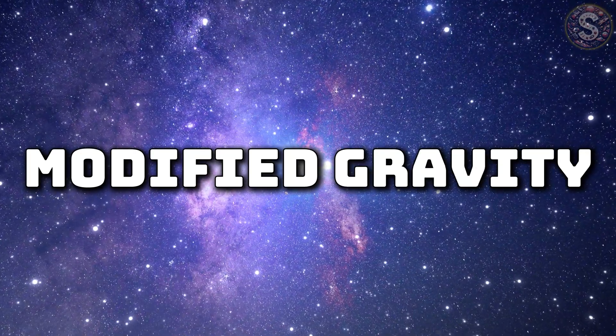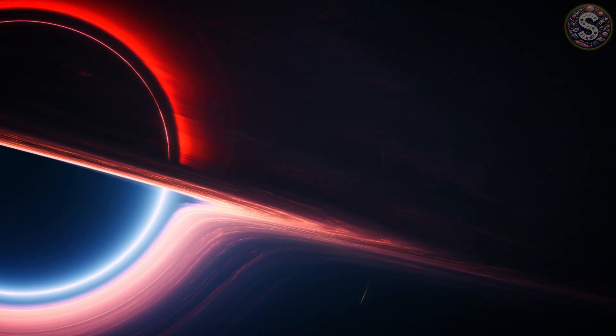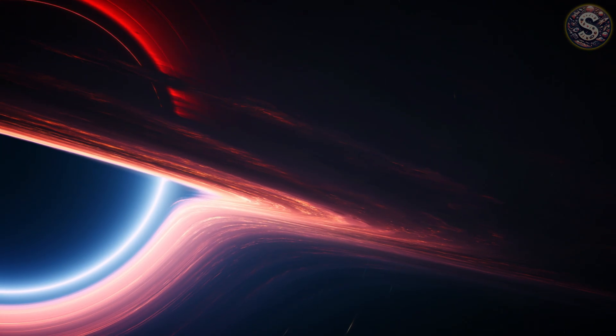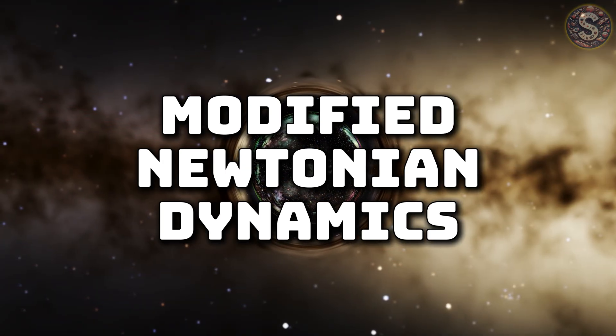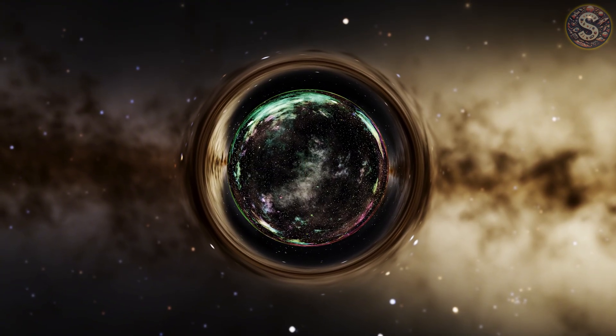Number two, modified gravity. Einstein's equations have survived for over a century, predicting everything from time dilation to black holes. But what if they don't work perfectly on cosmic scales? Enter modified Newtonian dynamics, or MOND, which argues that gravity behaves differently across vast distances.